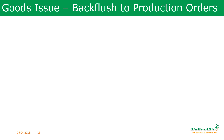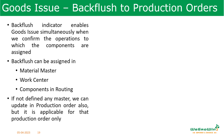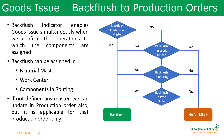So far we discussed manual goods issue to production orders. Now let us discuss goods issue to production orders through backflush. Backflushing is a term used to describe a function of components being issued from stock at the time of completing the works order automatically — these parts are issued automatically without user interaction. The quantity backflushed depends on the bill of material usage. In SAP, the backflush indicator enables goods issue simultaneously when we confirm the operations to which the components are assigned.